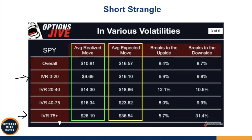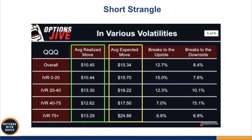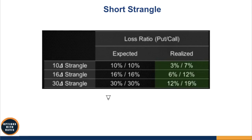The expected move is always overstated — you're always receiving premiums based on the implied volatility expected move, but in actual fact the movement is much lesser. The expected move is greater in all different volatility conditions; when you have a higher volatility condition, you have a bigger edge. You can see the difference between the expected move and the realized move — when IV rank is very high, the difference is more than $10. They also did studies for the IWM and QQQ index ETFs. The expected breach should be 16% on a 16 delta strangle on both the put side and call side.